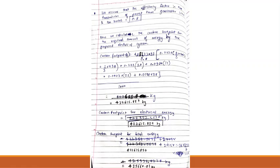So we now calculate the carbon footprint for the required amount of energy by the proposed electrical system. It is given by the following expression, and we have about 422,615.857 kg of CO2 for that. Carbon footprint for total energy is given below.